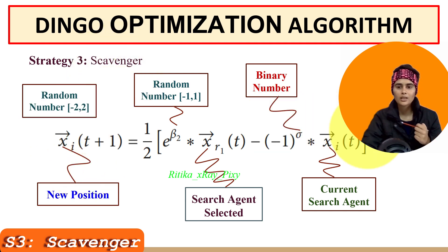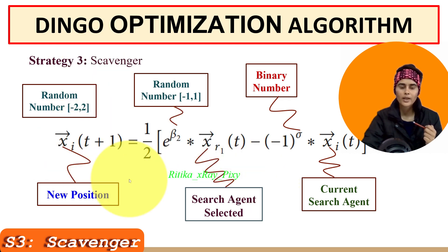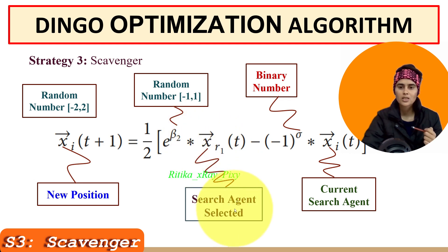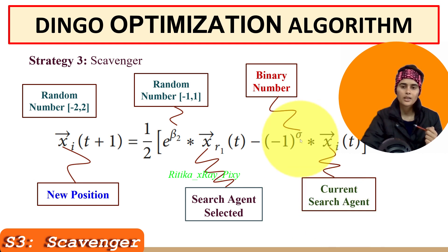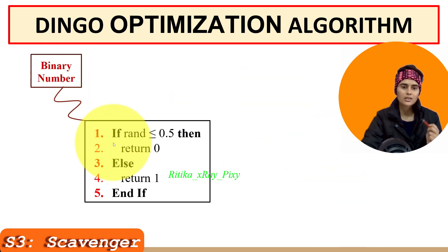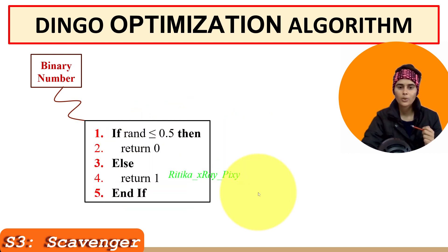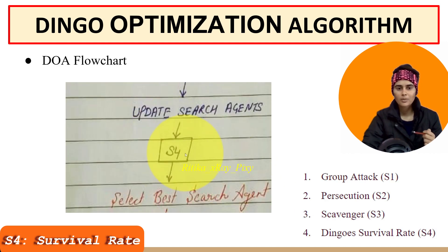For strategy three — no hunting, random walking — we calculate the dingo's position using an equation involving (1/2), a random number in [−1, 1], a search agent, r1, a selected search agent, and sigma. Sigma is a binary number generated by checking whether a random value is less than or equal to 0.5: if true, return 0; otherwise return 1.